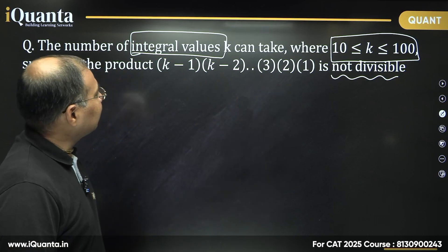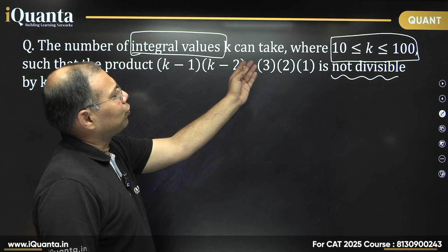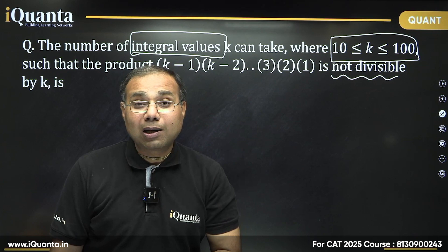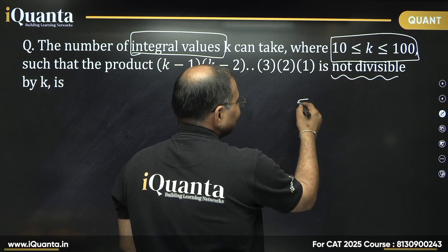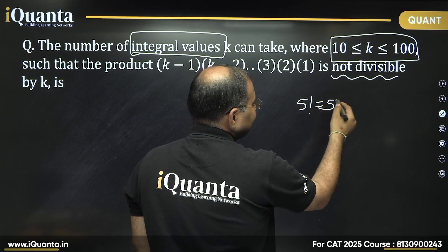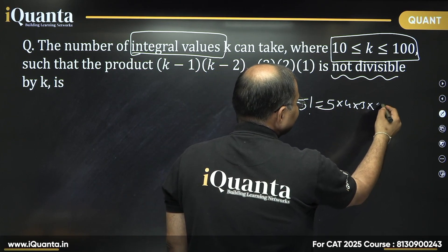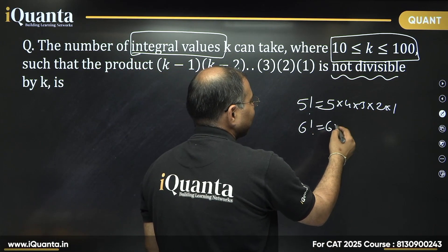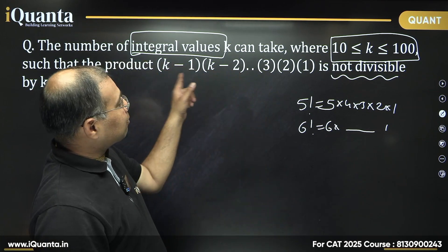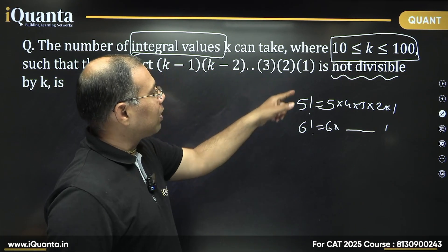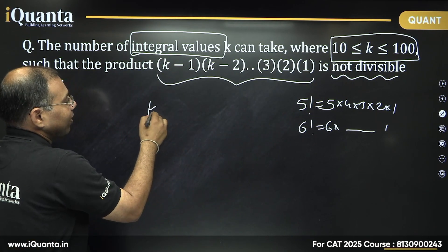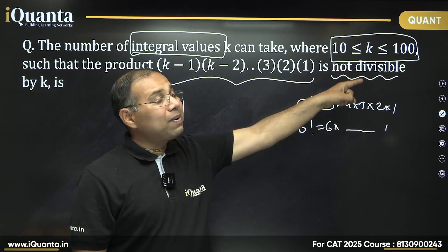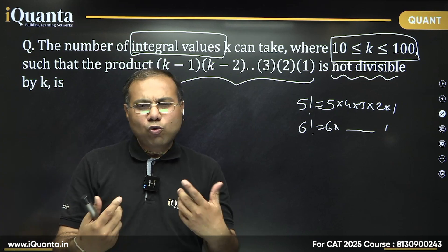What about this product? It is a long product starting from 1, 2, 3, 4, 5 and so on up to k−1. Do you recognize this pattern? Yes — it is the expansion of a factorial. When you say 5 factorial, it means the product starting from 5, 4, 3 down to 1. Same way, this product starting from k−1 down to 1 is nothing but (k−1) factorial. So the question is simply: (k−1)! should not be divisible by k.